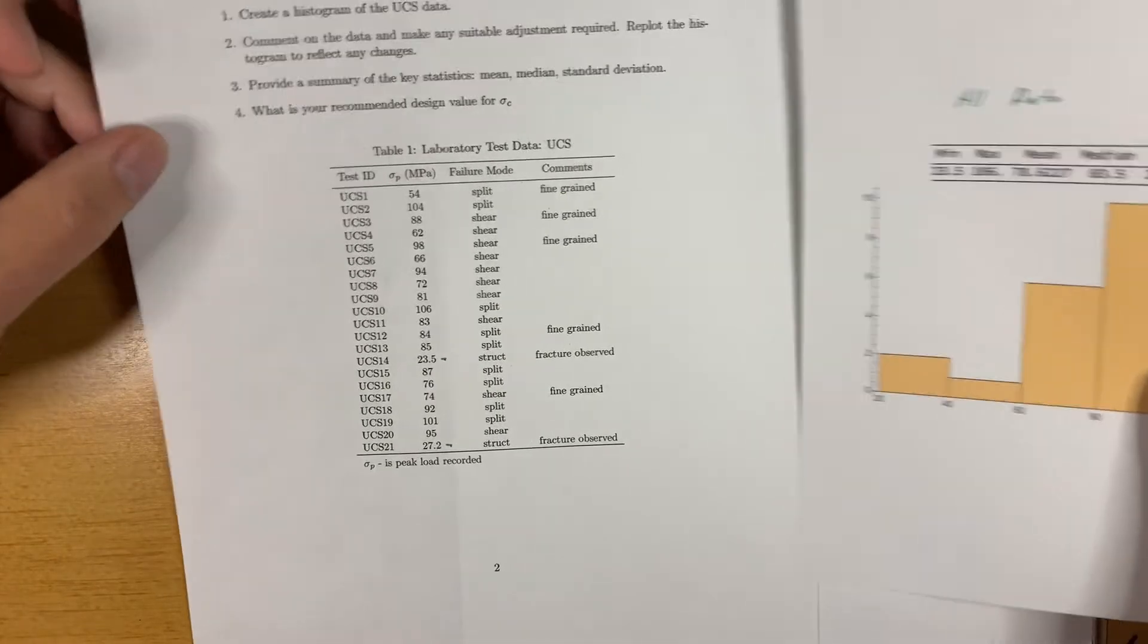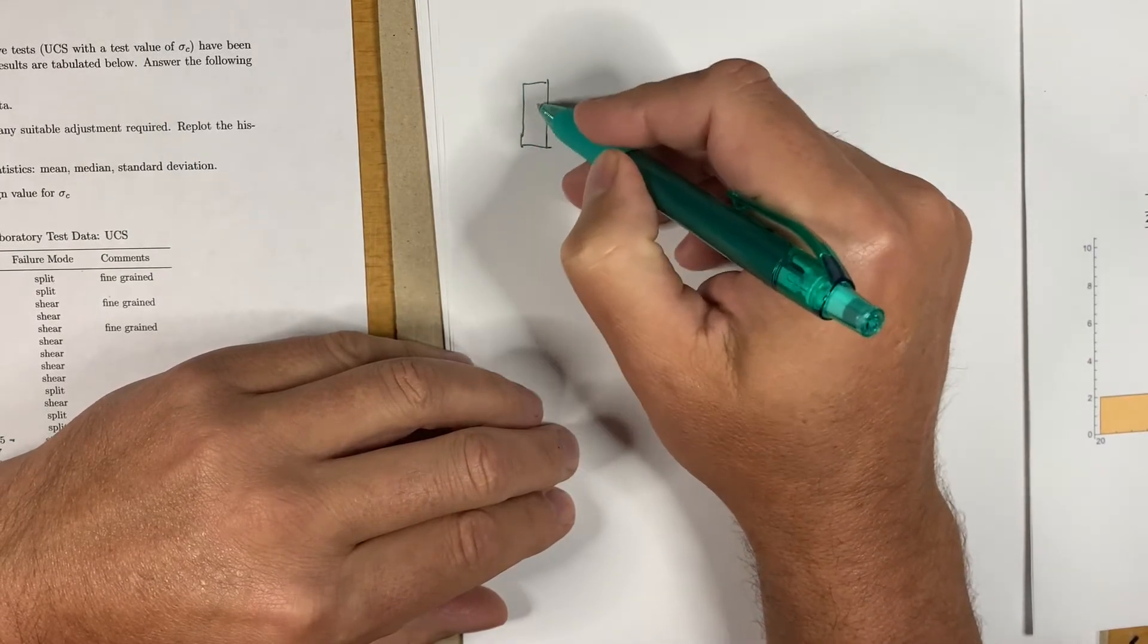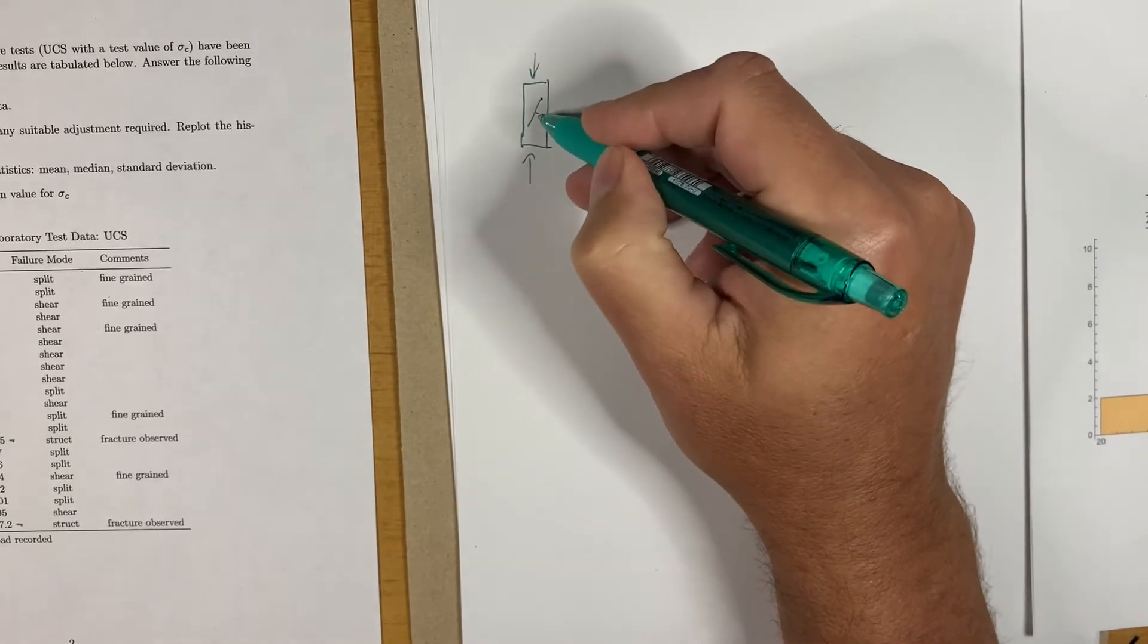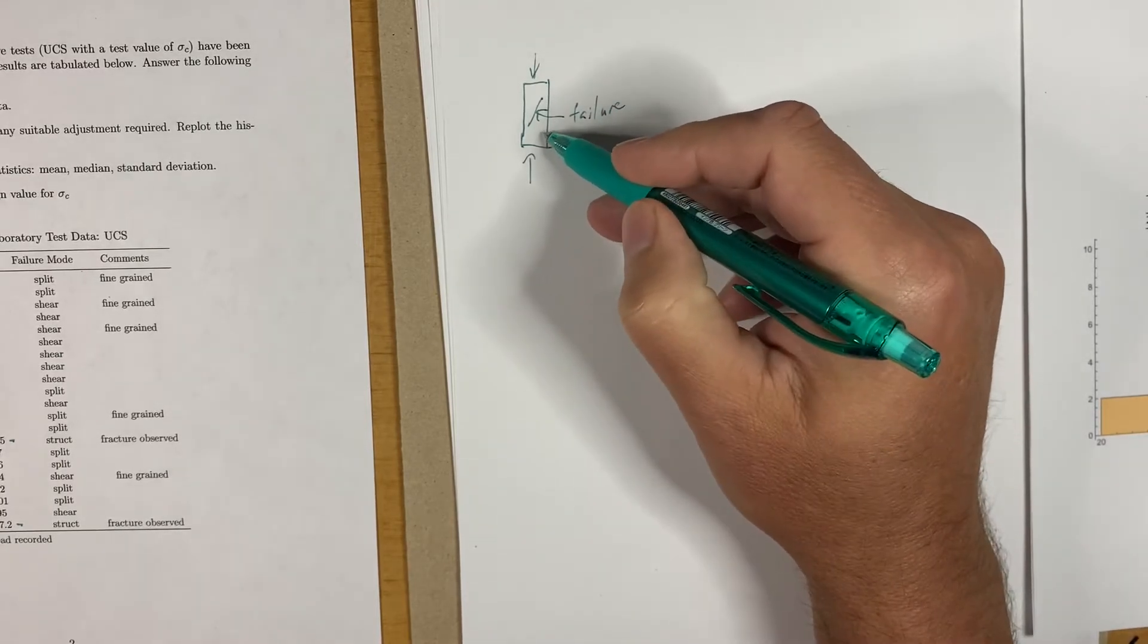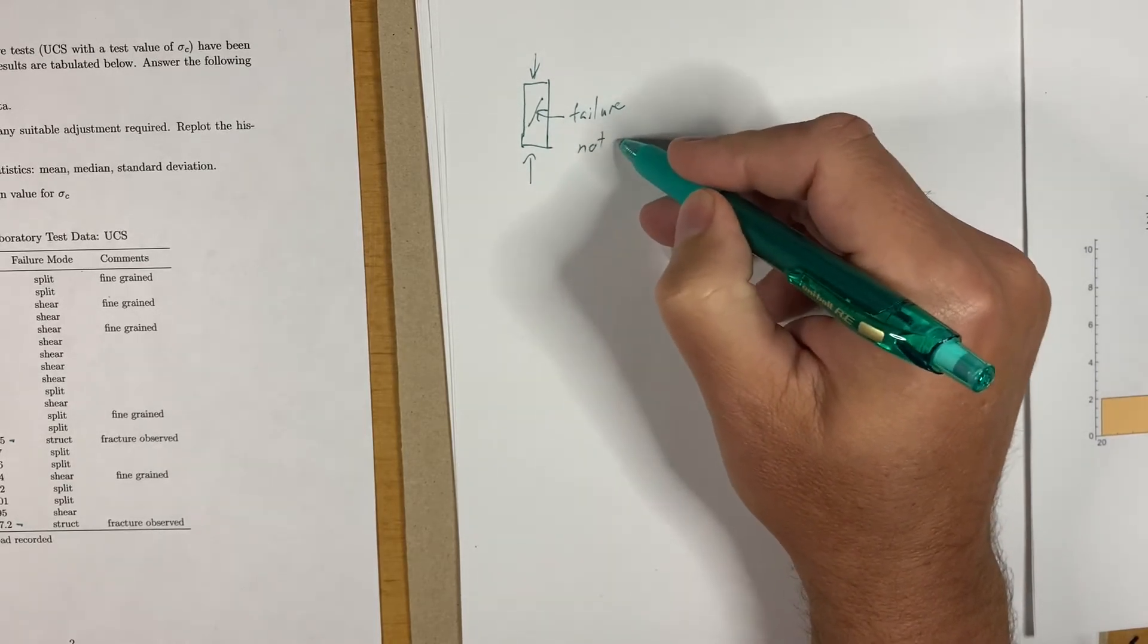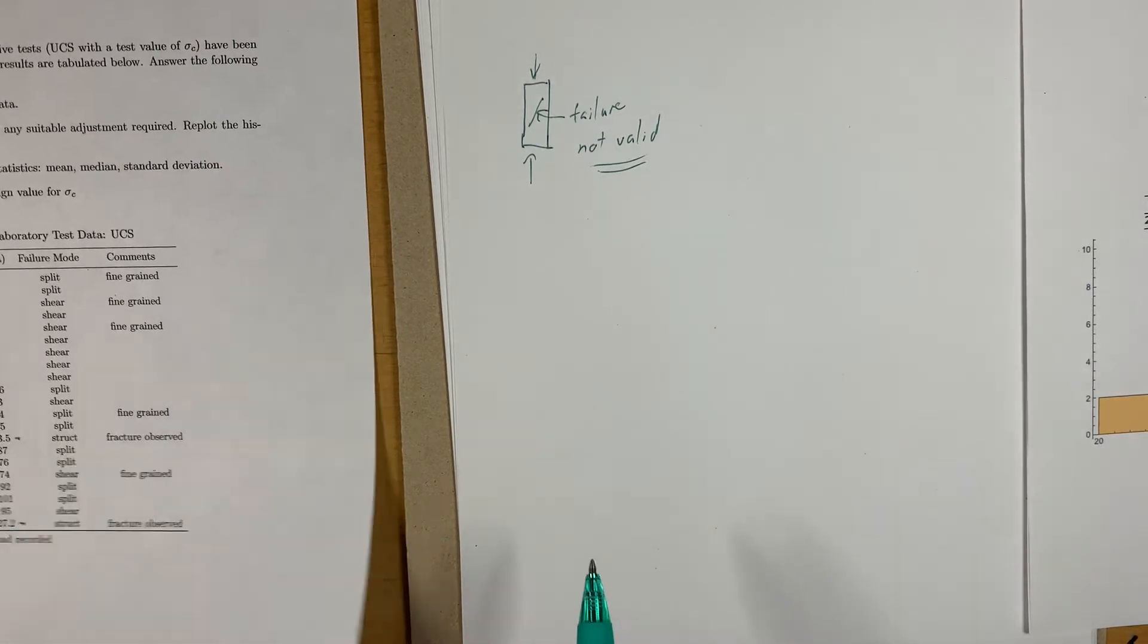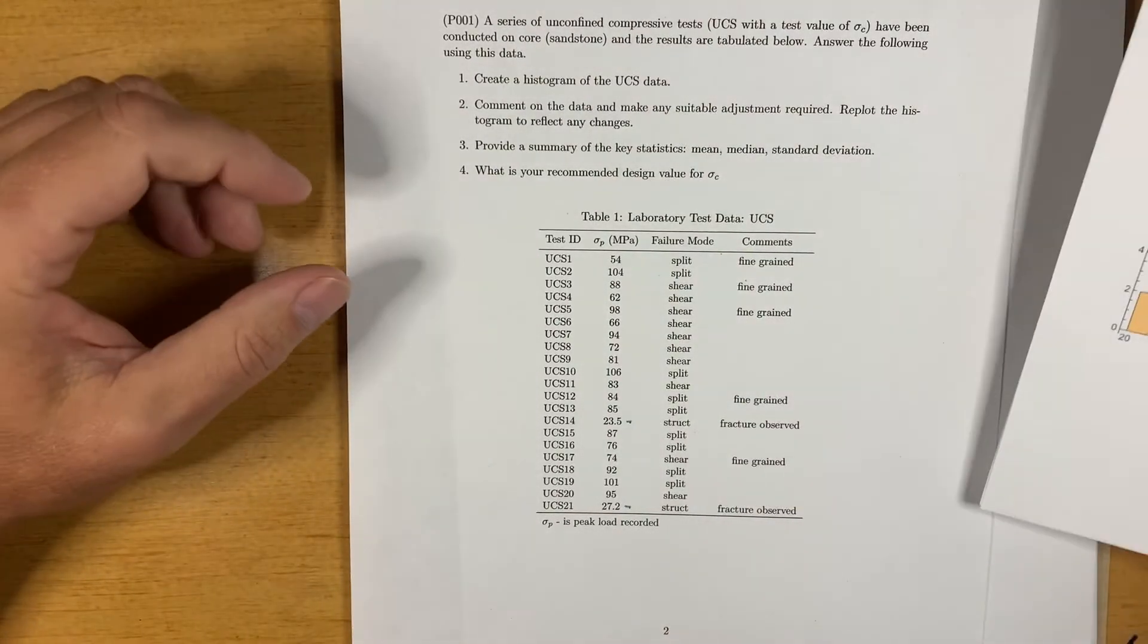So really, what does that mean? It means that the specimens had some kind of weak plane in it before the test occurred. And then after they were broken, the failure occurred on that. And so is that a valid measure of the strength of the intact rock? No, it's not. And so we can reject those two values as not representative of the unconfined compressive strength of the specimens. And then we can remove those from our data set.